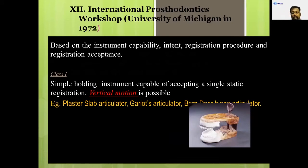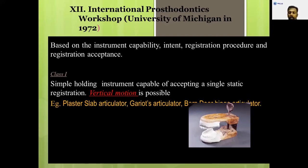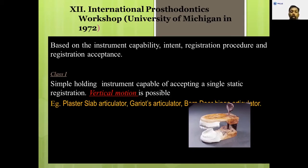An important classification was put forward by an international workshop at the University of Michigan in 1972. They classified articulators into four groups: Class one, two, three, and four. Class one is a simple device where only vertical motion is possible — up and down. The hinge articulator is a perfect example for class one articulators. It is a simple holding device which accepts only one vertical motion.